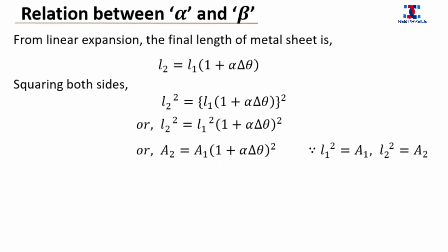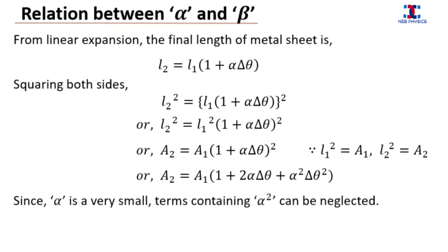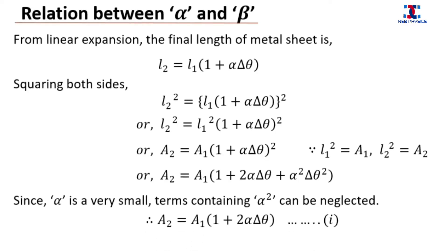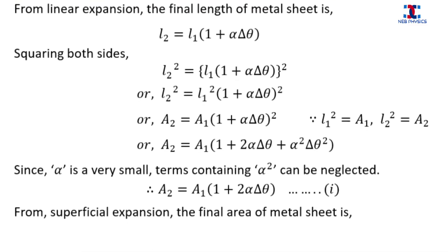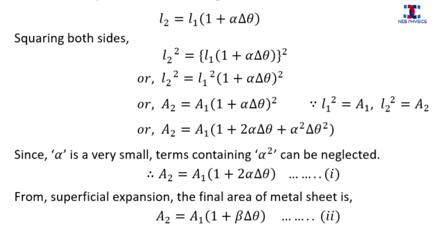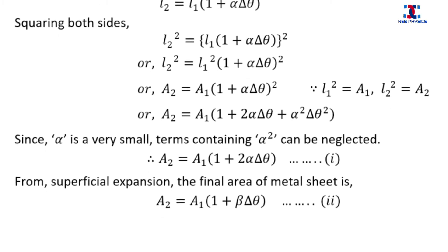l1 squared is the initial area of the square metal sheet, written as a1, and l2 squared is the final area, written as a2. Using the formula of (a + b) whole squared, we get the following expression. Since alpha is very small and less than one, the square of alpha is further smaller, so we can neglect terms containing alpha squared. From the superficial expansion, the final area can be written as a2 = a1 times (1 + beta·delta theta).